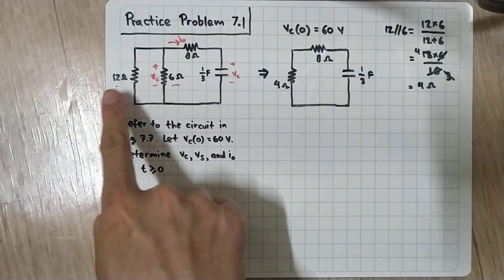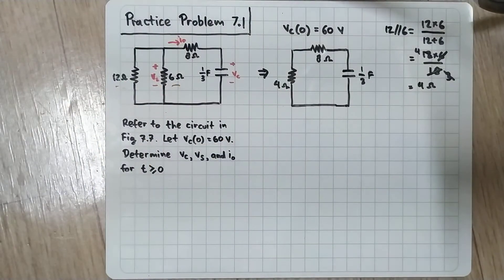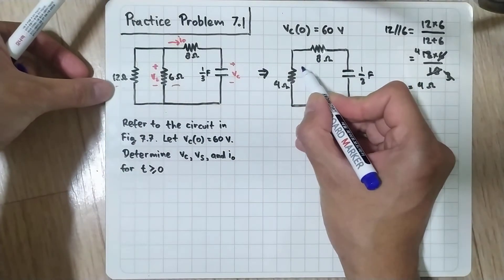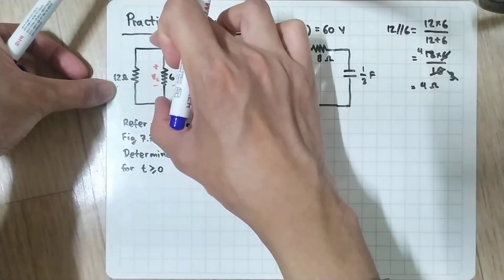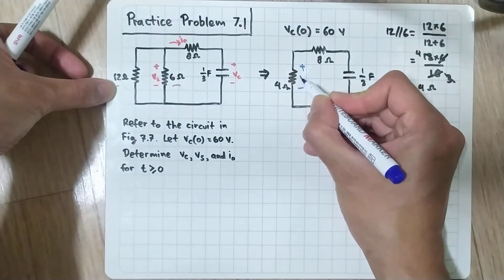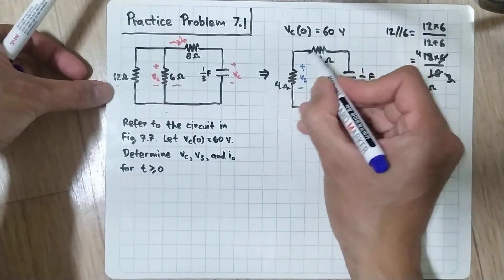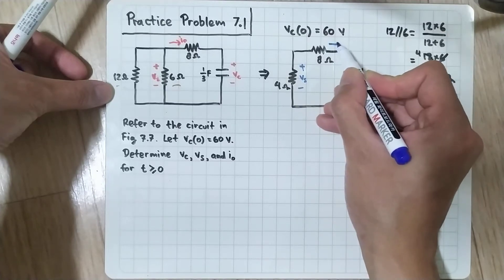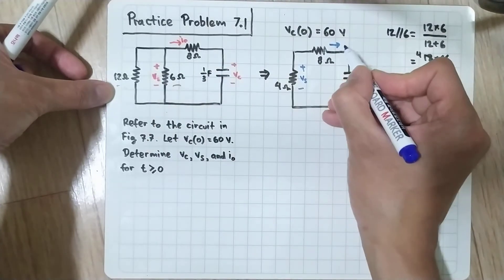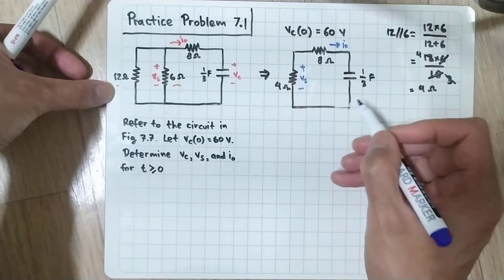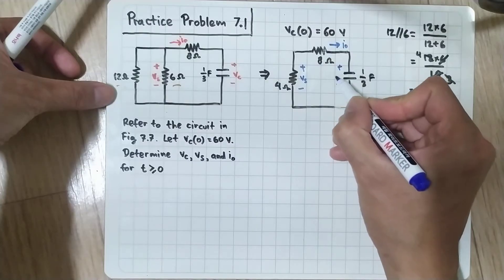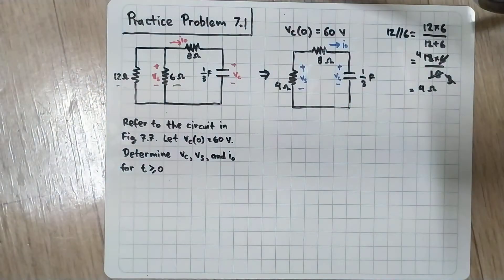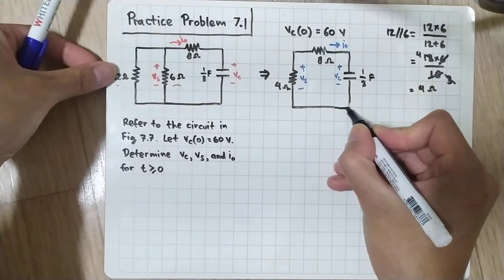We redraw the circuit so that the 12Ω parallel with 6Ω becomes 4Ω. The voltage across the parallel combination is still VS, since parallel elements share the same voltage. The current through the 8Ω resistor is still I0, and the voltage across the capacitor is still VC.